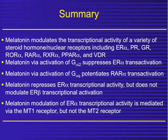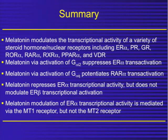So melatonin modulates the transcriptional activity of a variety of steroid hormone nuclear receptors, including estrogen receptor alpha, progesterone receptor, retinoic acid receptor, ROR alpha receptors, and vitamin D receptors. Melatonin via activation of G-alpha-I2 proteins suppresses ER alpha transcriptional activity, but by activation of G-alpha-Q, potentiates RAR alpha transcriptional activity — so two different G proteins are used for these different actions. Melatonin represses ER alpha transcriptional activity but does not modulate ER beta, and it is the MT1 receptor that mediates this action, not MT2.